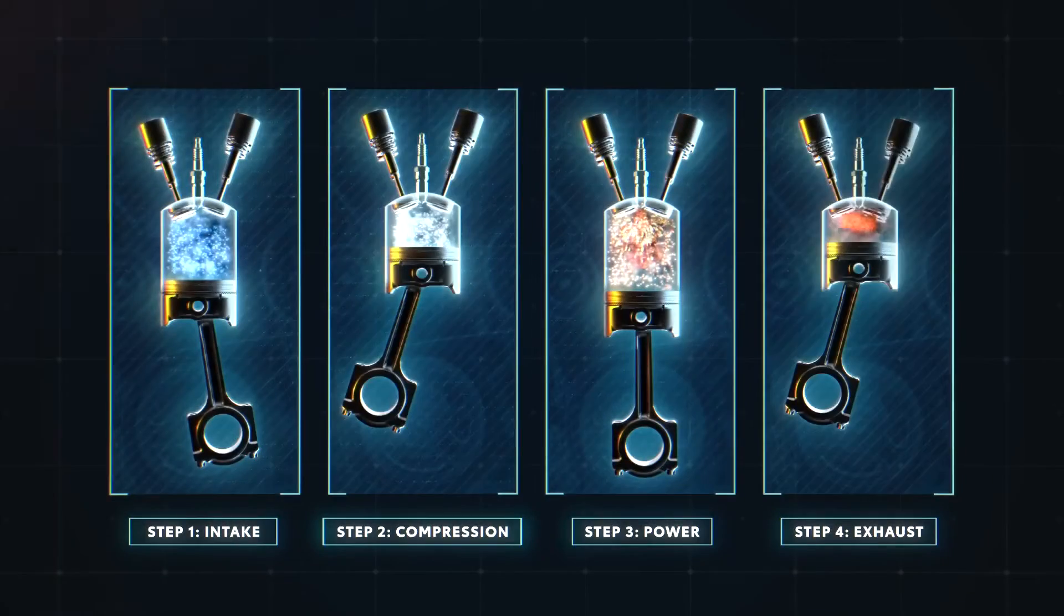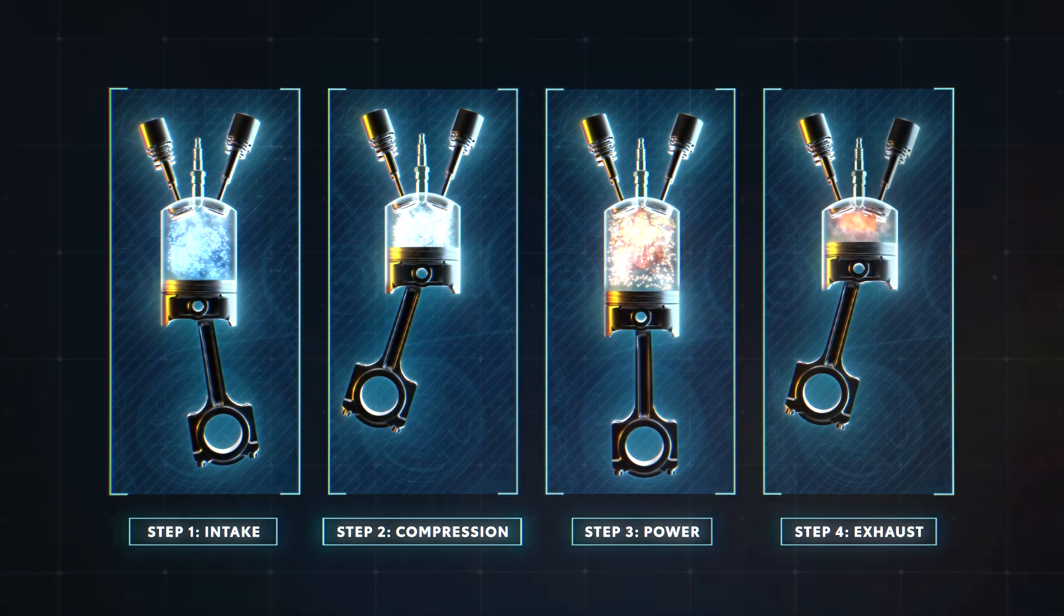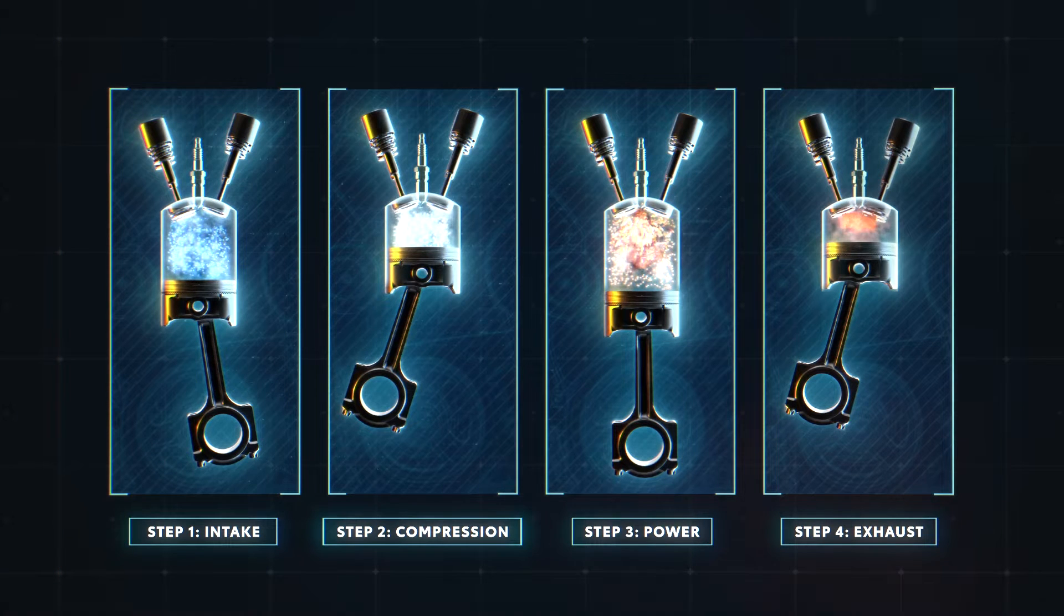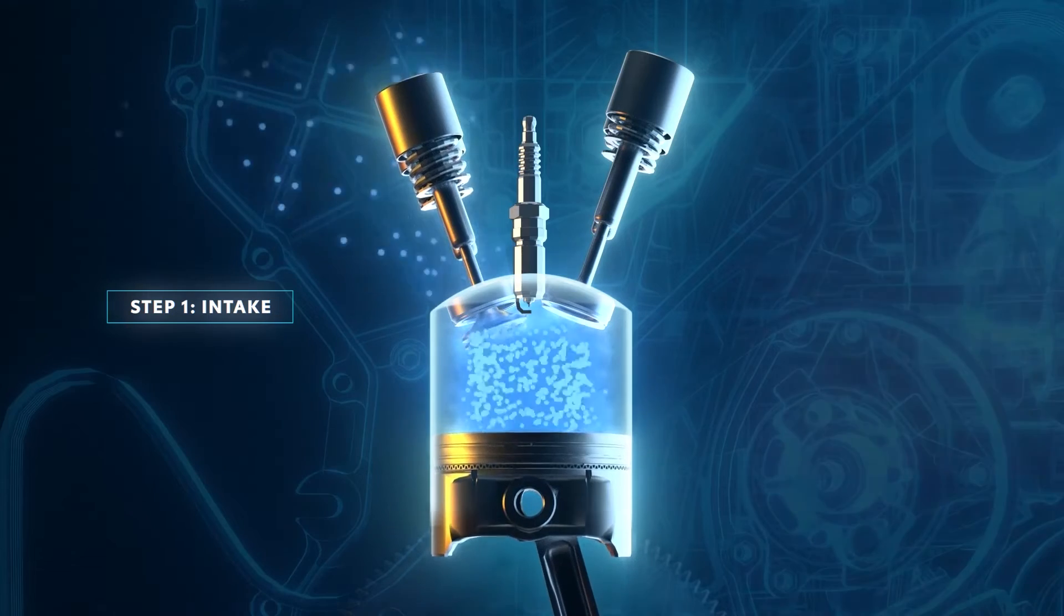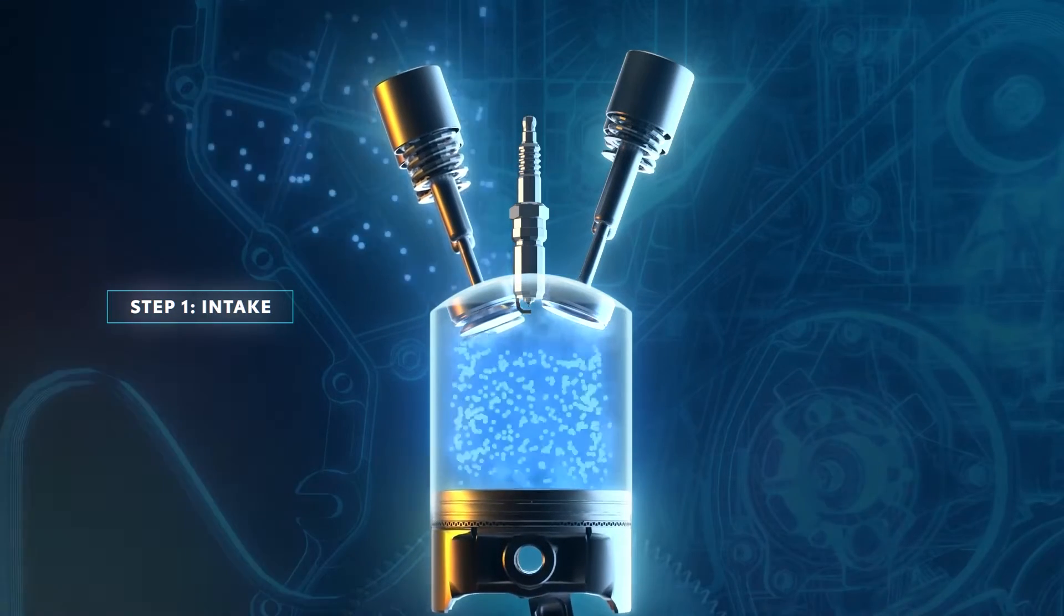You may have heard the term four-stroke to describe a vehicle engine. This refers to its four stages of operation. First, the piston moves down, creating a vacuum in the cylinder chamber that pulls air in through precisely controlled intake valves.